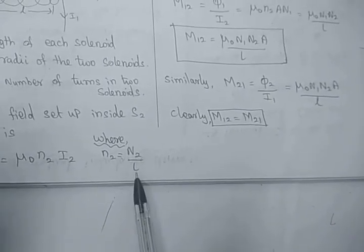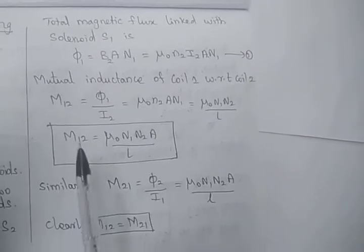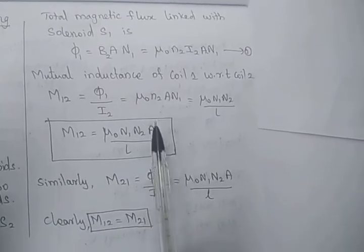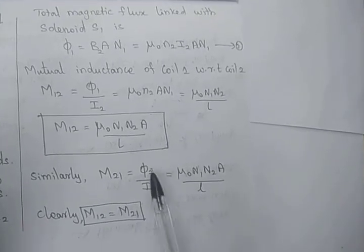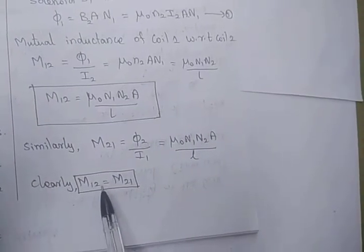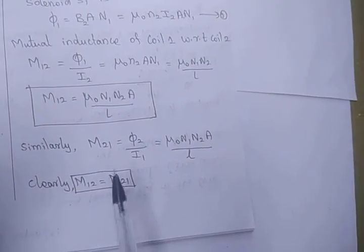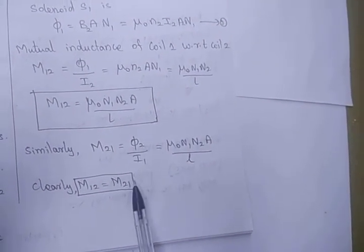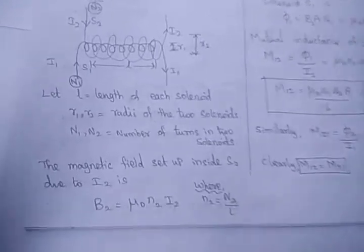Where small n2 is number of turns per unit length, equal to capital N2 divided by L. So M = μ₀·N1·N2·A/L. Similarly, the mutual inductance of coil 2 with respect to coil 1 is M21 = φ2/I1, and we arrive at the same equation. So M12 equals M21 — the mutual inductance of the primary coil with respect to the secondary, and vice versa, are the same. This is the expression for mutual inductance of two long solenoids.